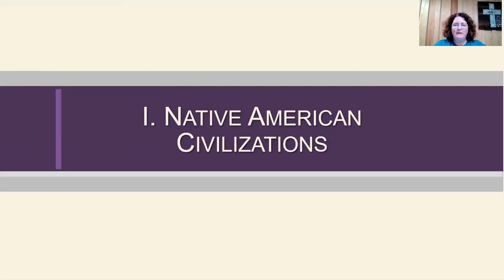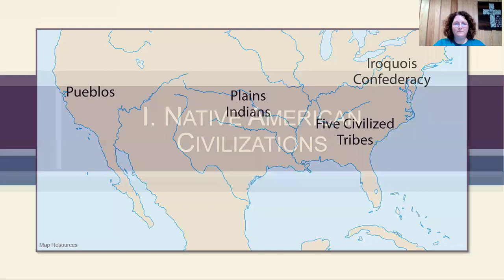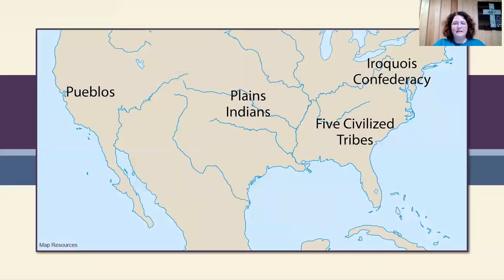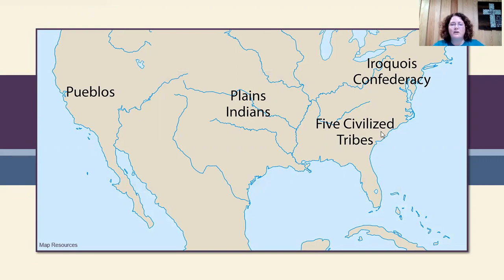First we're going to look at the Native American civilizations, because before the Europeans began exploring, in the Americas there were already Native populations. In North America, specifically in what is now the United States, there were different regions of Indians: the Iroquois Confederacy, Five Civilized Tribes, the Plains Indians, and the Pueblos.